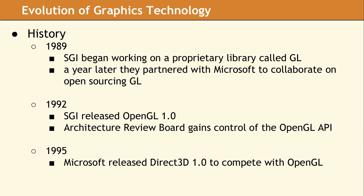This story starts in 1989. SGI began work on a new 3D graphics library called GL, which provided access to their high-end 3D rendering hardware. This hardware was expensive and not widely used, but it was the only option for real-time 3D graphics which provided any degree of realism.